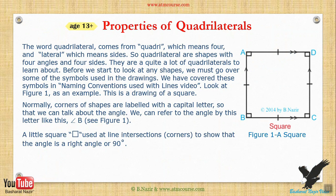Properties of quadrilaterals. The word quadrilateral comes from 'quadri', which means four, and 'lateral', which means sides. So quadrilaterals are shapes with four angles and four sides. There are quite a lot of quadrilaterals to learn about. Before we start to look at any shapes, we must go over some of the symbols used in the drawings.